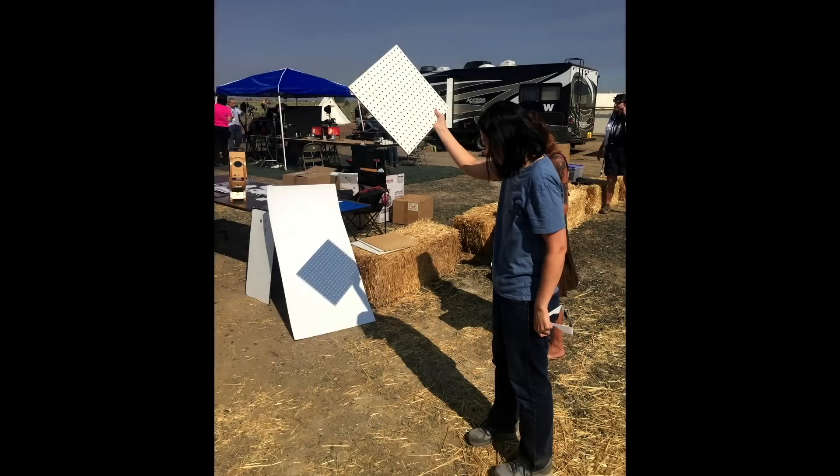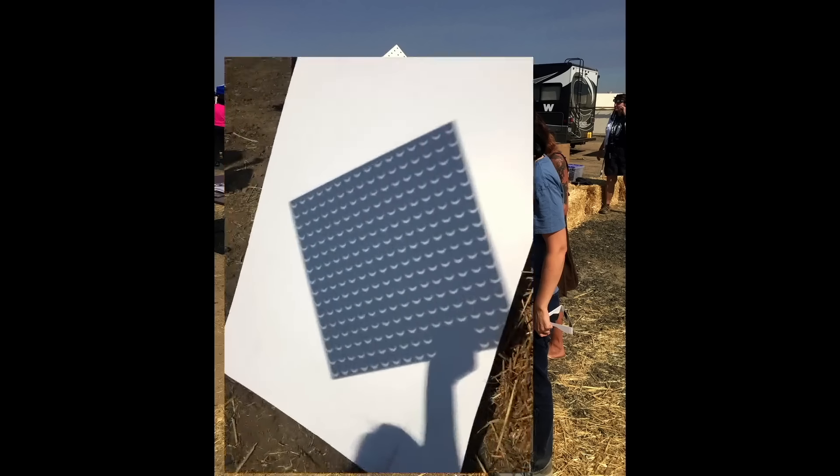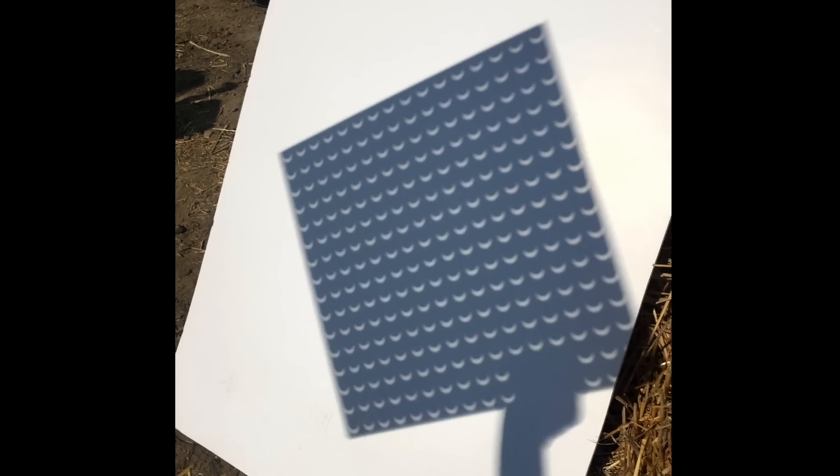The easiest and cheapest way of viewing the sun safely is by using a pinhole. Here, we see Julie holding up a piece of pegboard. What you see on the screen is that each hole has produced a small image of the partially eclipsed sun. The smaller the pinhole, the sharper, but dimmer the solar image becomes.